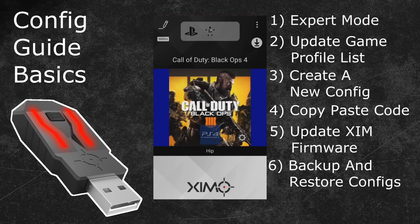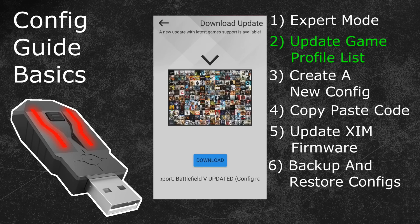The second topic of this video is about the process of updating your Zim game profile list. Whenever a new game profile is available, or an already existing one received an update, your Zim manager will notify you with a notification arrow in the top right. When you click on that button it will forward you to the download menu. At the bottom you can learn about the changes of this download update. In my case there is an updated game profile available for Battlefield 5, plus the new Warhammer game is now supported by the Zim as well.